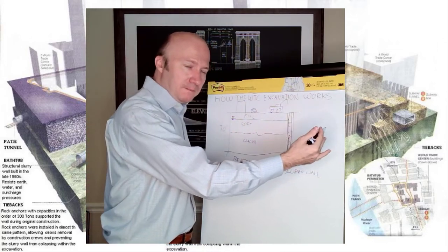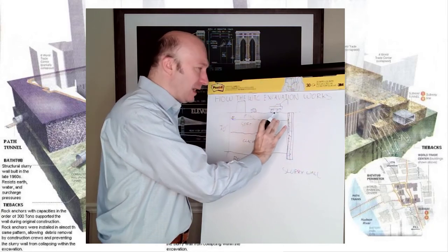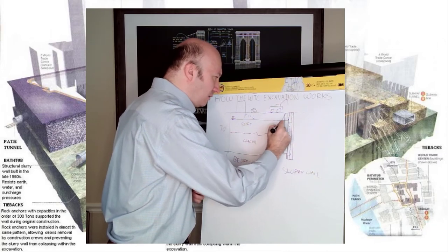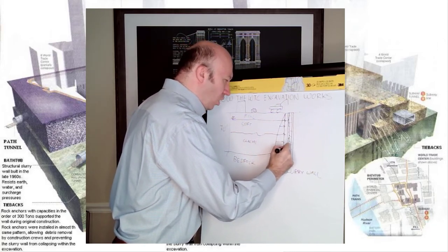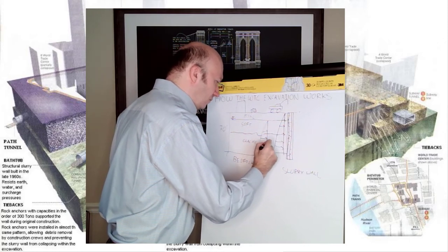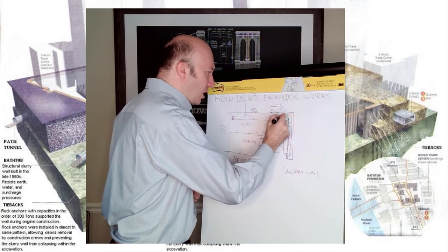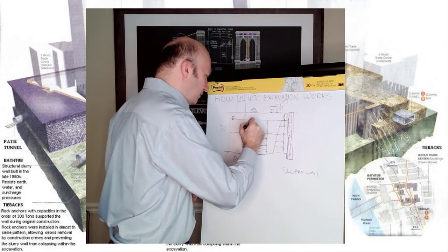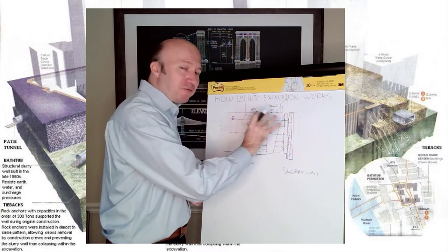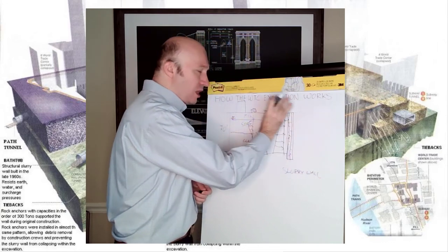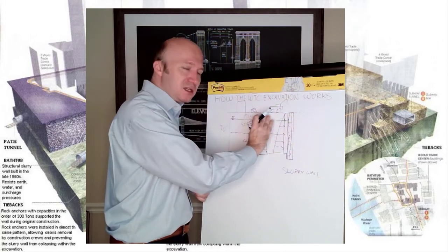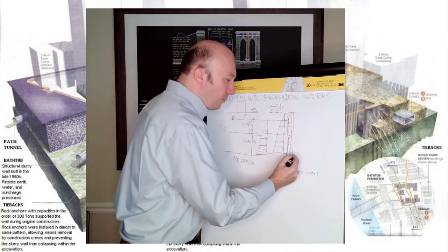Now if we were to excavate and not put anything else — just leave the wall in place — that wall was going to collapse, because there are loads coming in from the soil, loads coming in from the water, and loads coming in from construction surcharges, buildings, and other things. All these loads are lateral, and we have to make sure that when we're excavating the wall doesn't move too much into the excavation, otherwise there's going to be a lot of damage from soils settling and buildings moving horizontally.